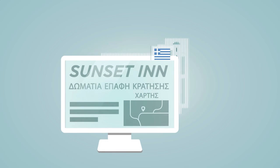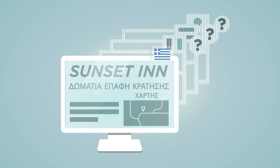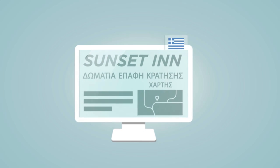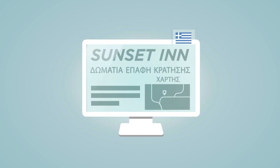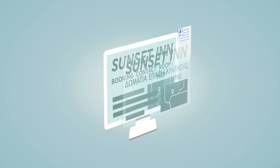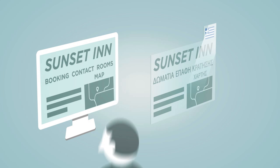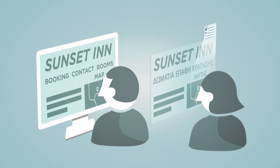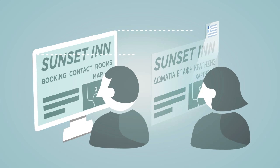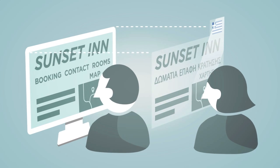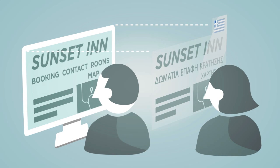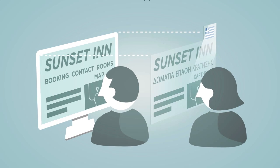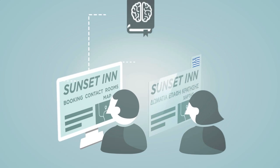Where are the foreign language versions of the website hosted? Nowhere. The original website is not multiplied. Only the original website exists, fully controlled by its owner. Visitors see the original website, but instead of the source text, they see the translation projected by the translation proxy, on the fly.